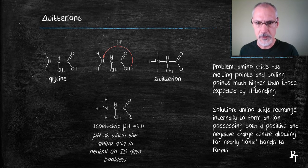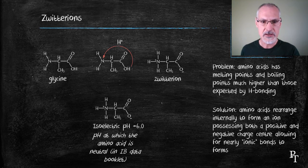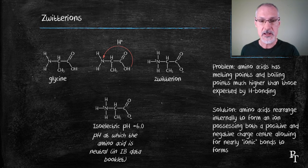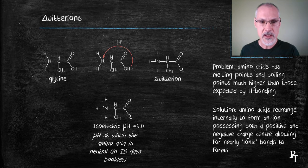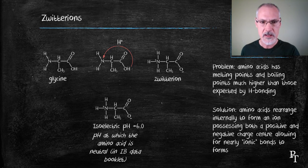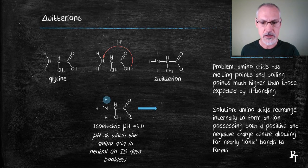This zwitterion that forms tends to be isoelectric, meaning same electric, at one particular pH. In the case of glycine, that pH is 6. So at a pH of 6, it would possess the same number of positive and negative charges. If we change the pH of the solution, we can thereby alter its charge.